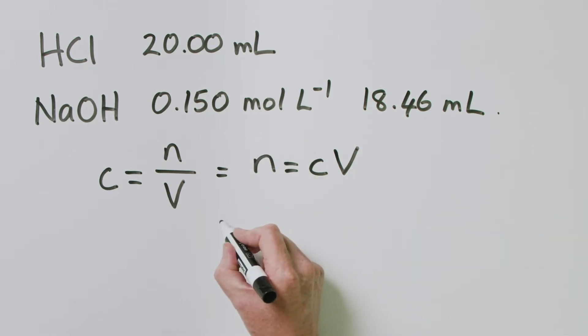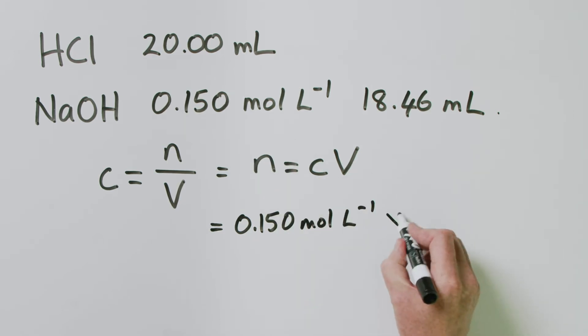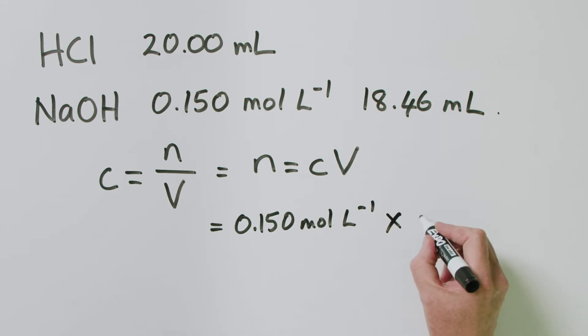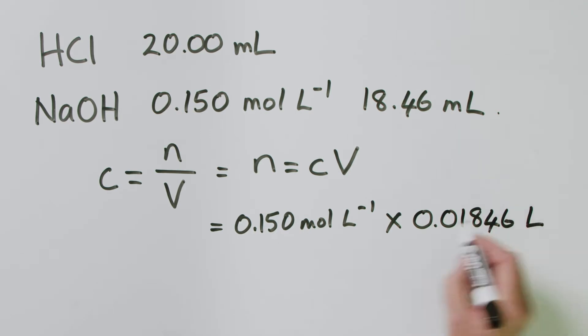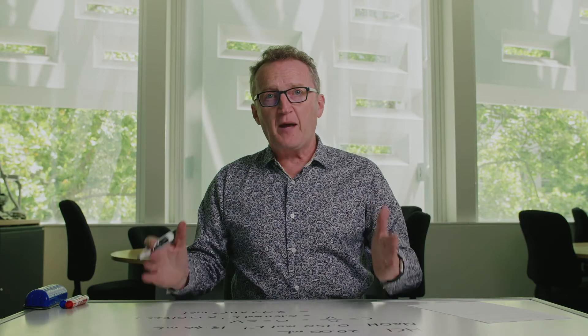So, having done that, we can say that's equal to concentration, which is 0.150 mole per litre, multiplied by the volume, 18.46 mLs. We want that in litres. So, that's 0.01846 litres. And that is going to be equal to 2.77 times 10 to the minus 3 mole. That's the number of moles of sodium hydroxide that we're going to be using in this titration.